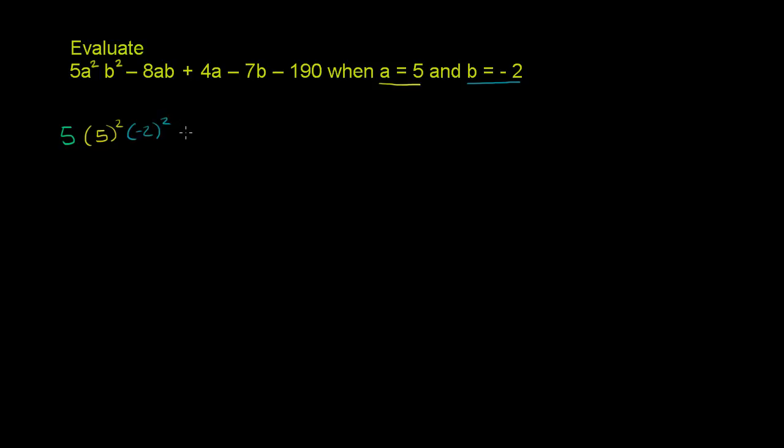And then we have minus 8 times a. But instead of an a, we want to put a 5 there. So times 5 times b. b is now negative 2. So times negative 2 plus 4 times a.